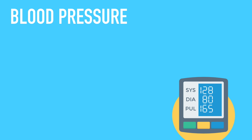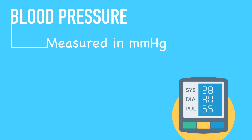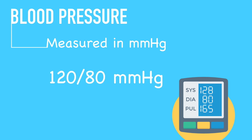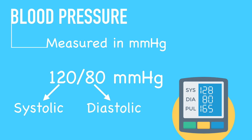Blood pressure is always measured in millimeters of mercury. When taking blood pressure readings, it will look something like this: 120 over 80 millimeters of mercury. The first number, and the highest, belongs to the systolic pressure, or the maximum during one heartbeat. The second number, and the smallest, belongs to the diastolic pressure, or minimum between two heartbeats.